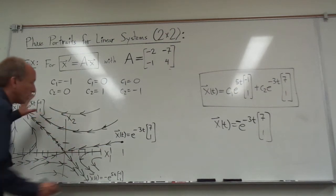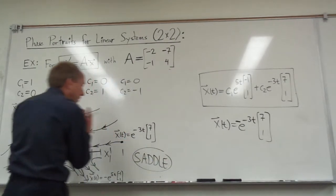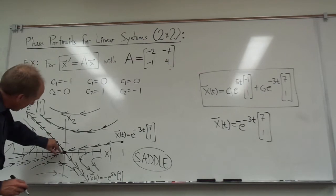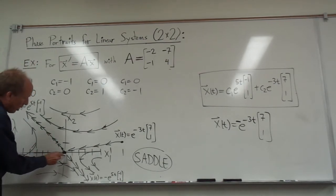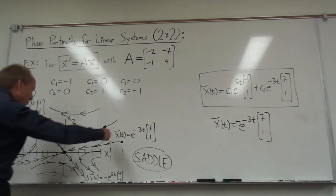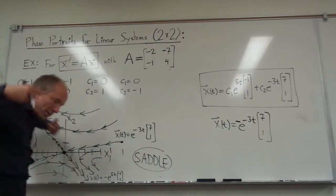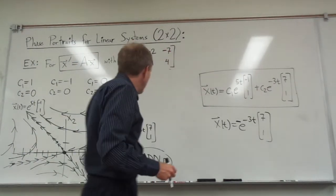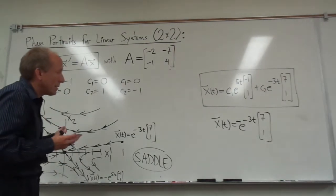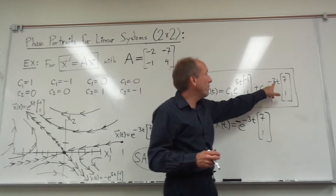This is actually what is called a saddle. The nature of this particular phase portrait, the origin looks like a saddle. It's like, you know, if you step off of the saddle in one direction, you go out to infinity forever. And if you step off the saddle along another direction, you get sucked into the origin. So it's a saddle. One, the main reason that it's a saddle is because one of the eigenvalues was positive and one of them was negative.